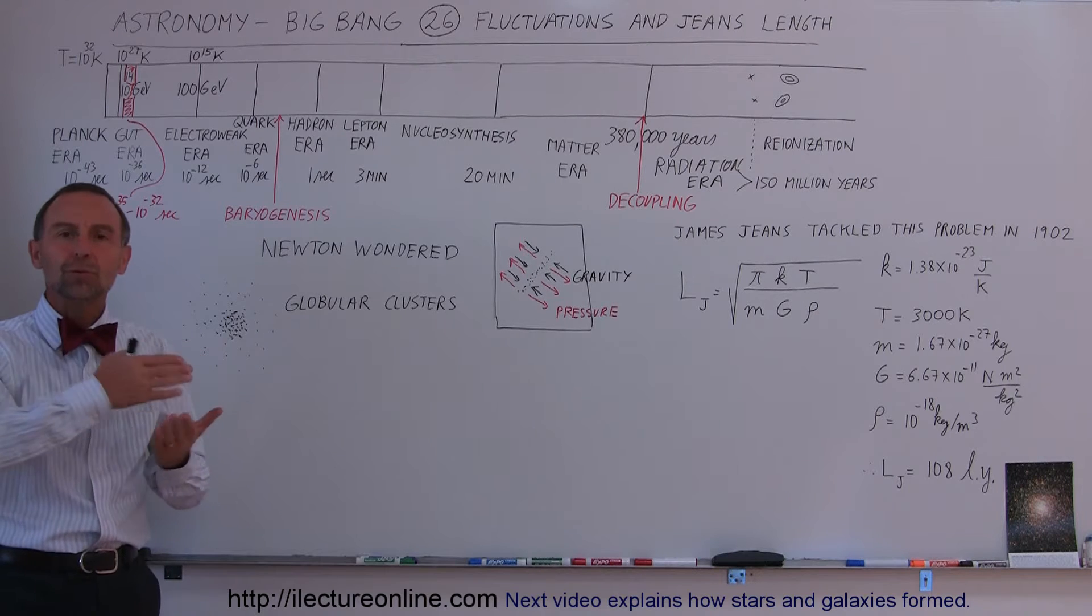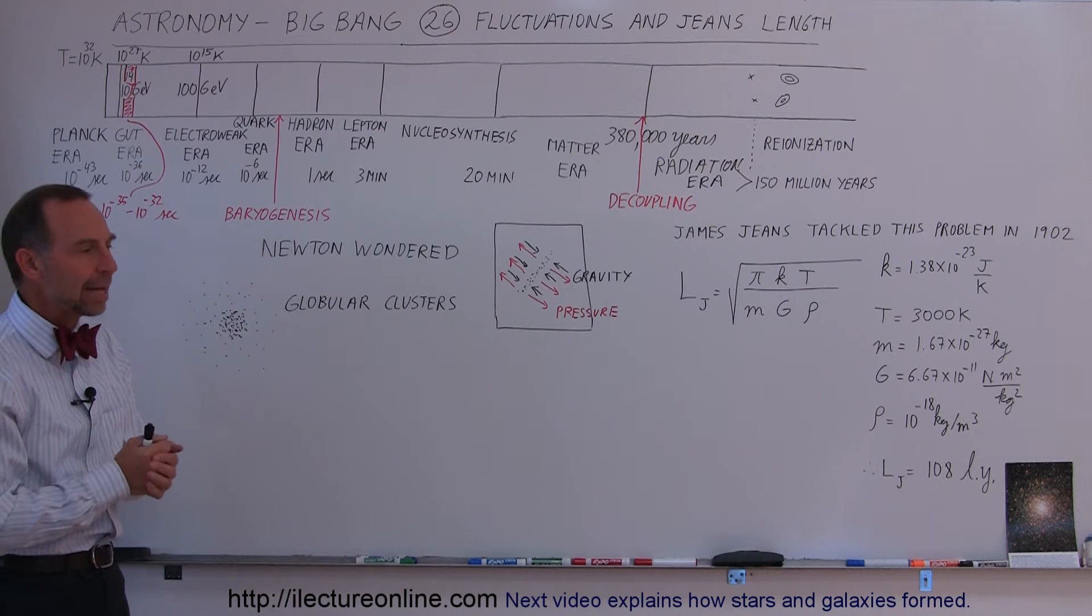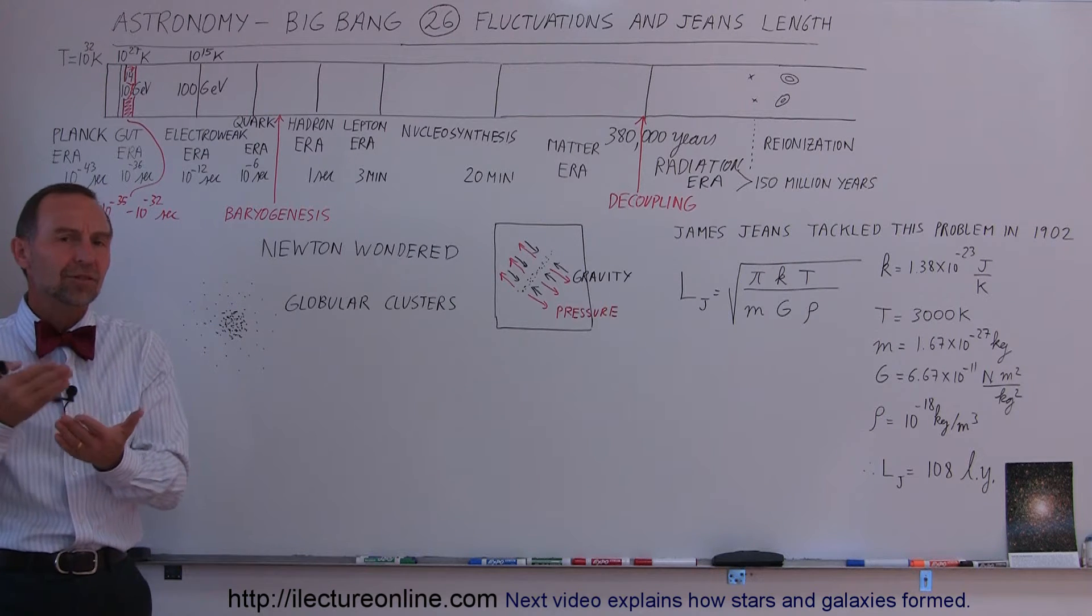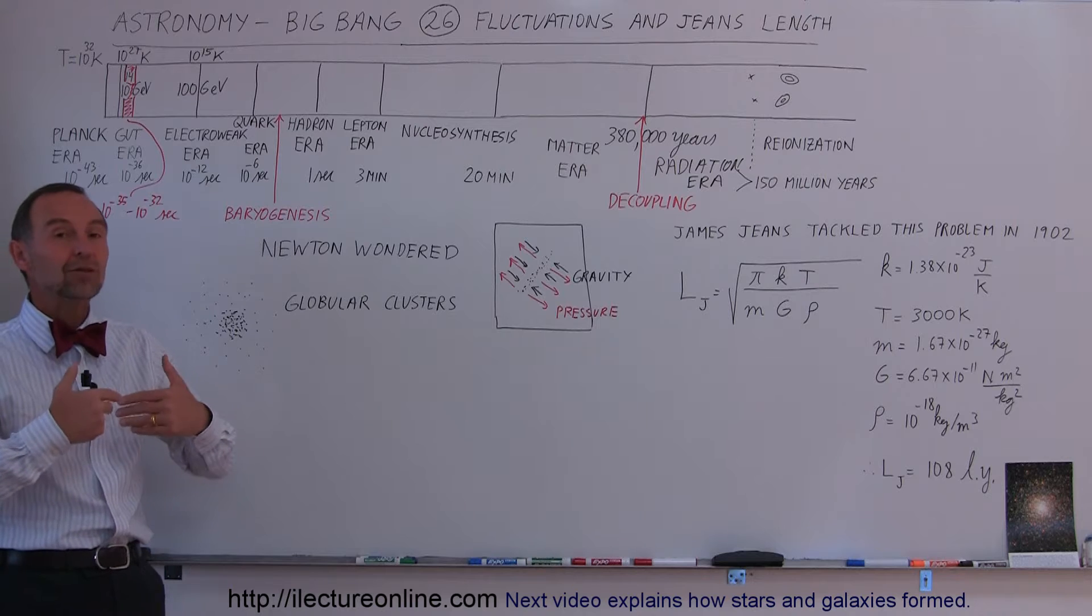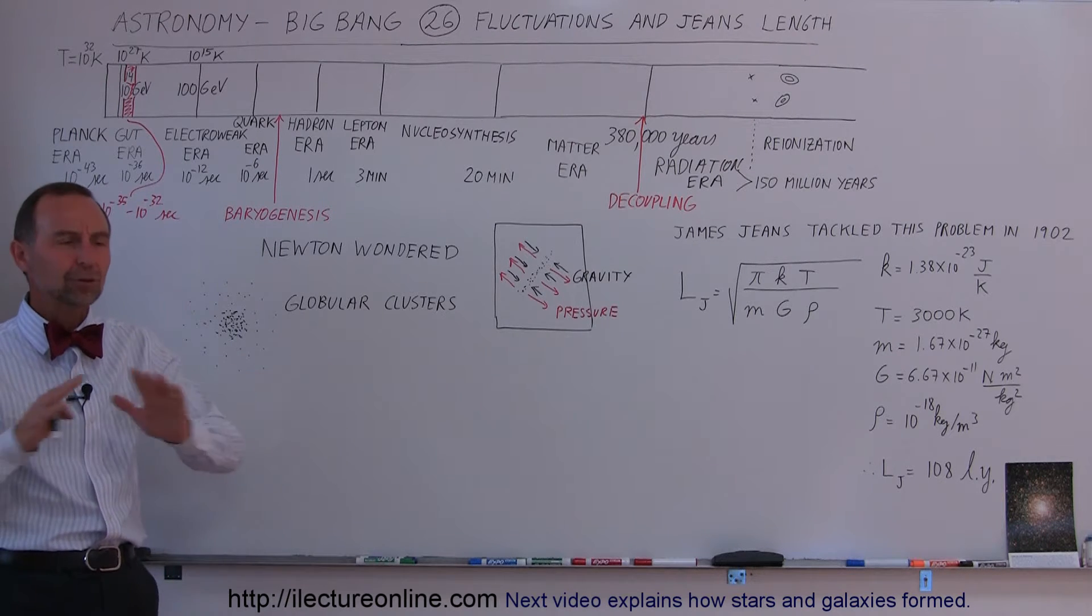And the radiation was free to roam through the universe because the universe was now transparent to the cosmic background radiation, which at the time had a wavelength of about 970 nanometers which puts it into the infrared radiation. This caused the universe to be completely devoid of light, no light whatsoever.